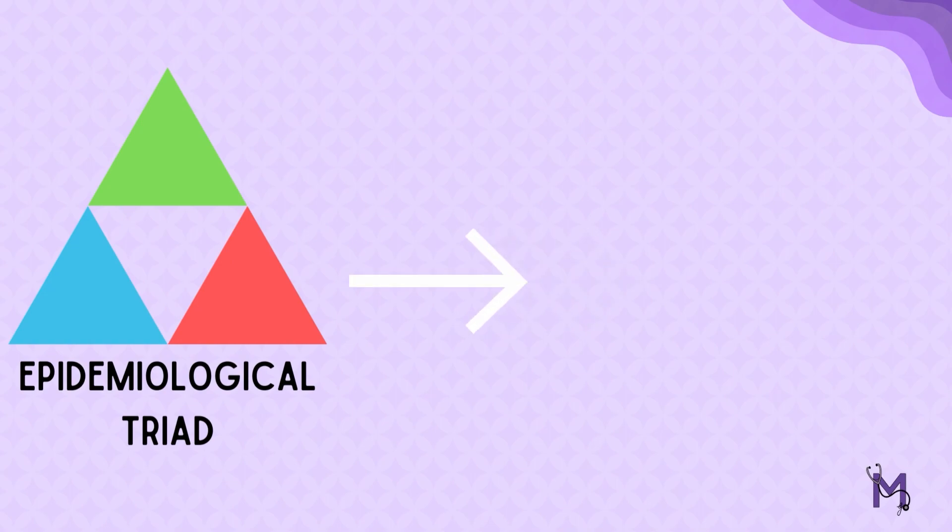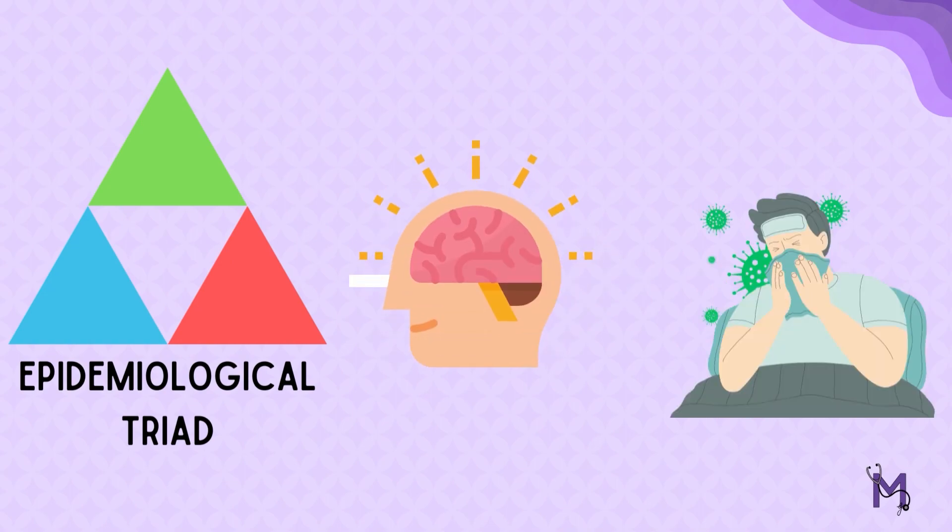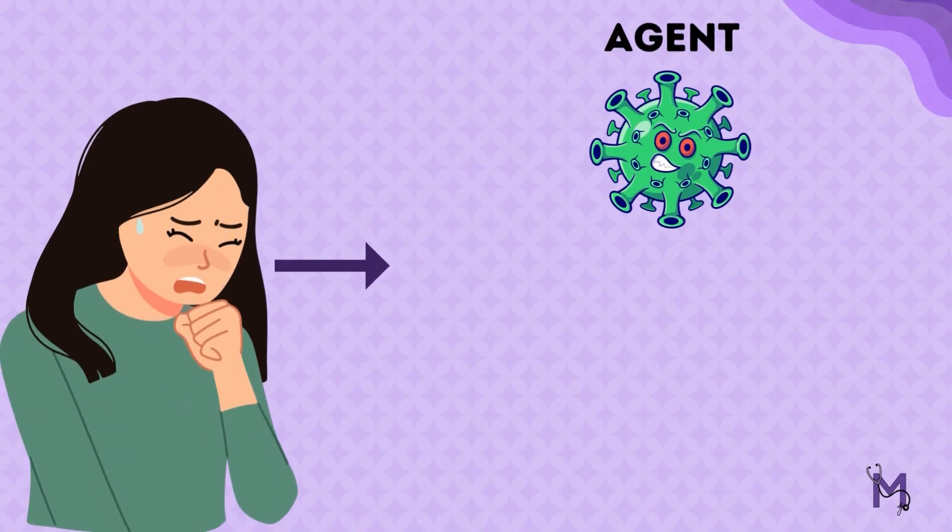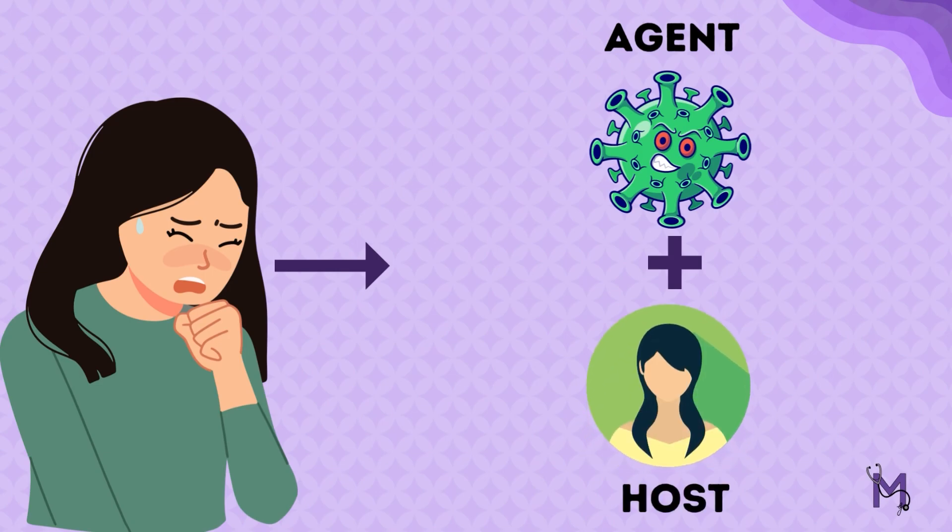The epidemiological triad is a model which helps us better understand the causation of diseases. The occurrence of a disease requires a causative organism known as an agent, as well as the person in whom the organism will cause the disease, known as the host. You might think that these two factors are enough to cause disease, but always remember the surrounding environment of the agent and host dictates the occurrence of a disease.